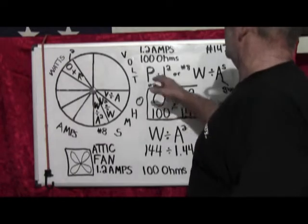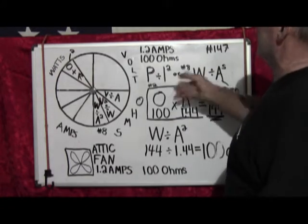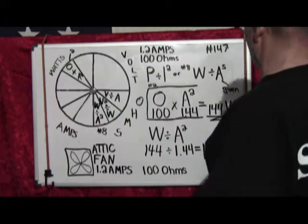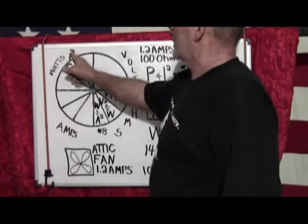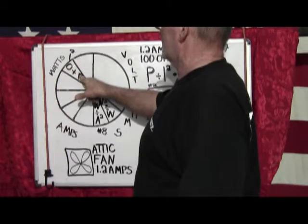It's P divided by I squared, which is watts divided by amps squared. We have a given which is 1.2 amps, so we come over to number two, the watts chart, ohms times amps squared.